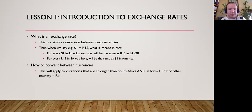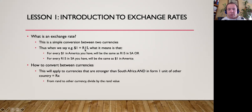If we have currencies that are stronger than us — for example, $1 equal to 15 rand — when we go from rand to the other currency, we're going to divide. So if I go from rand to dollars, I divide by 15. If I go from dollars to rand, I multiply by 15. To summarize: from rand to the other currency, divide by the rand value (in this case 15). From the other currency to rand, multiply by 15.